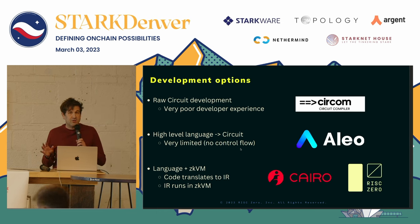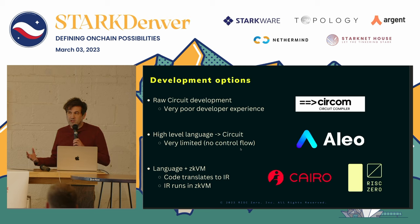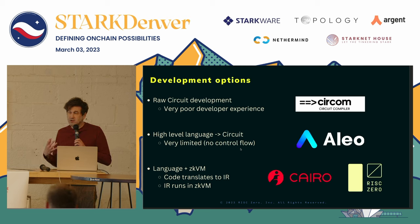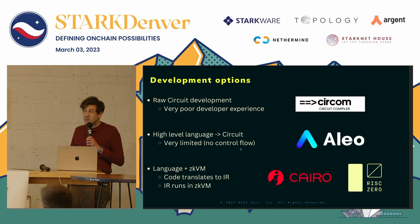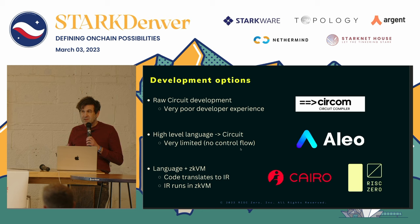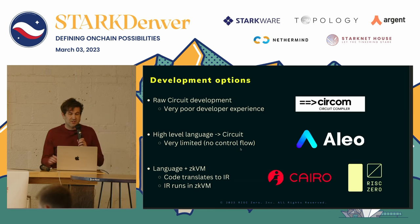The approach that StarkNet and Cairo have taken — and also the approach that we take — is to basically take the language that a programmer wants to write in, and translate it down into an intermediate representation that can then be run in a zero-knowledge virtual machine. By doing this, the circuit for the virtual machine only needs to be written once, and then the programmer doesn't have to think about it or know anything about polynomial constraints.